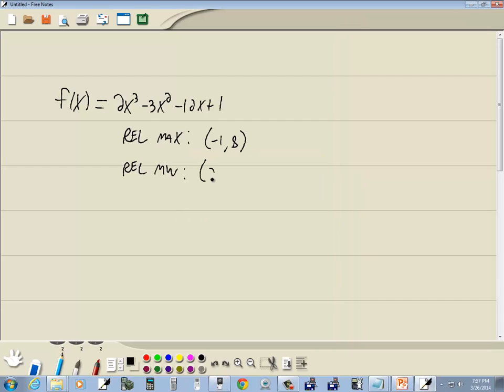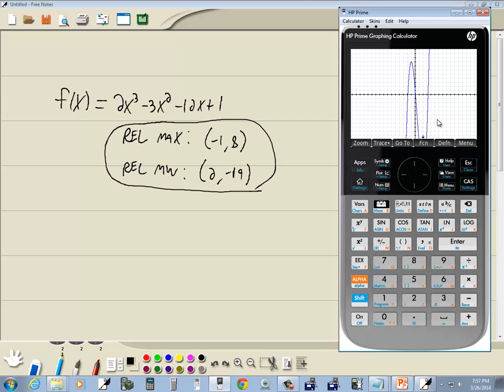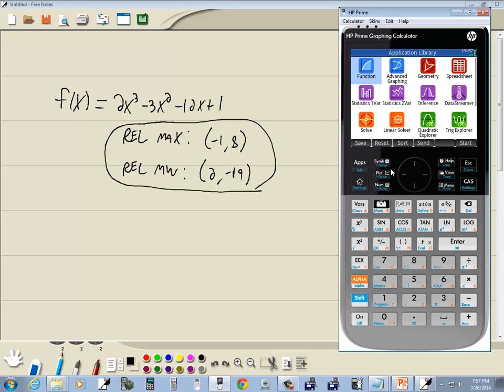And that would be our relative min. So 2, negative 19. And those will be our answers. And I'll click OK there. And again, I can move this back like that, to go back where it was. And then press apps, that'll bring you back here. That's finding relative min and relative max on HP Prime Calculator.